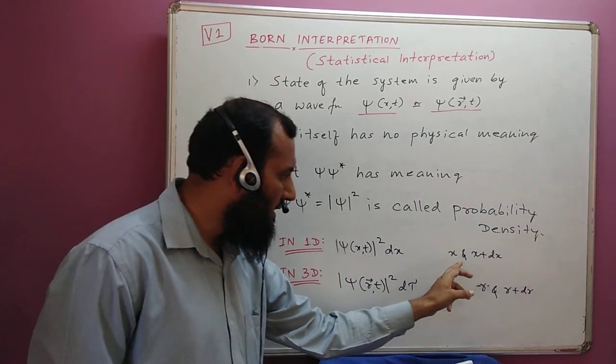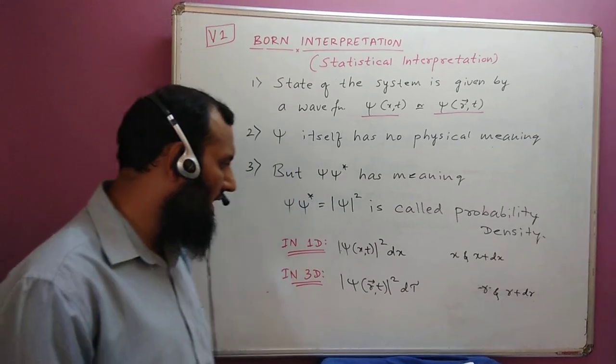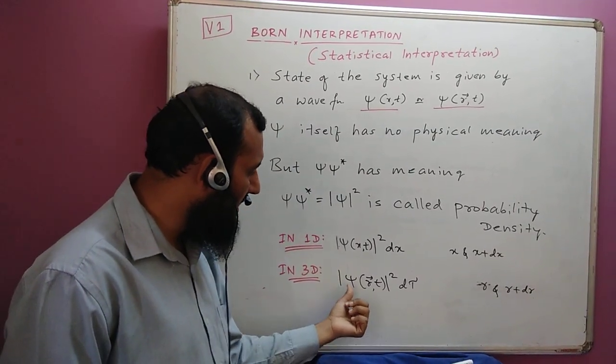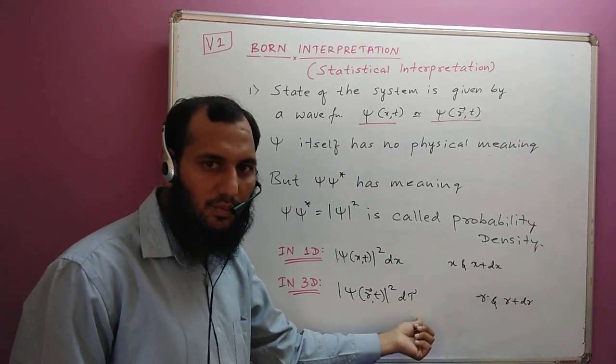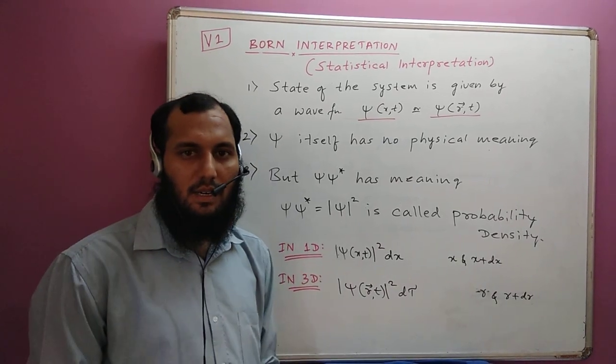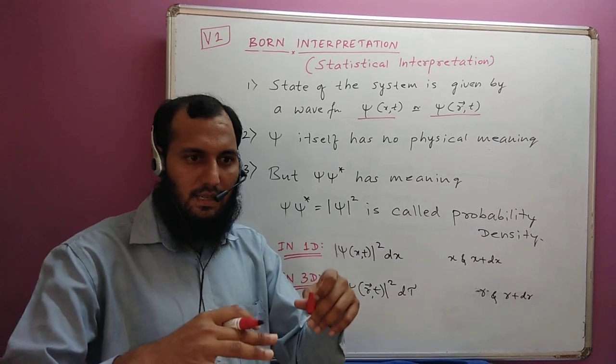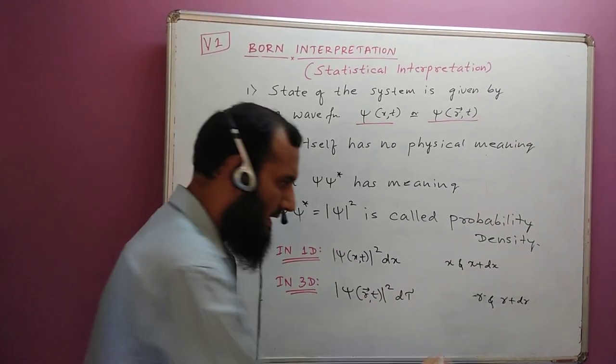And if you are dealing in three dimensions, then the probability density will be |ψ(r,t)|²dτ. This gives the probability of finding the particle in a volume between r and r plus dr. That's what we thought.